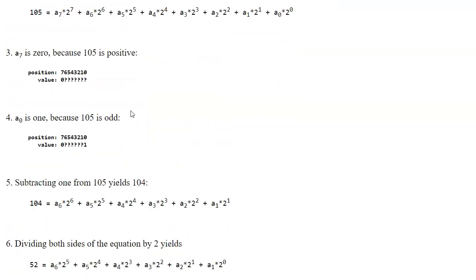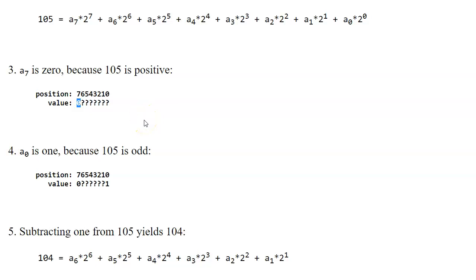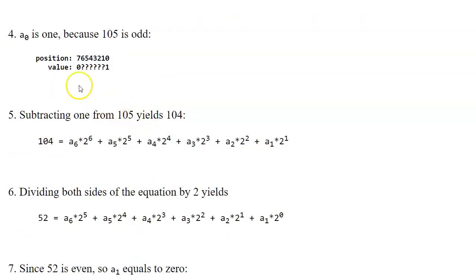First of all, we say that because 105 is positive, it's easy to assume that the value of the leftmost bit is a 0. So, next, if a6 is 1...